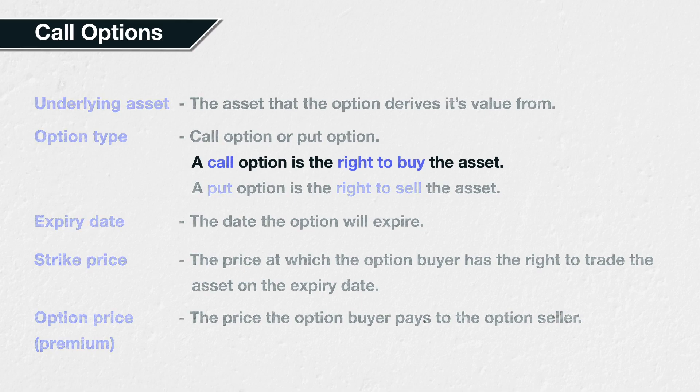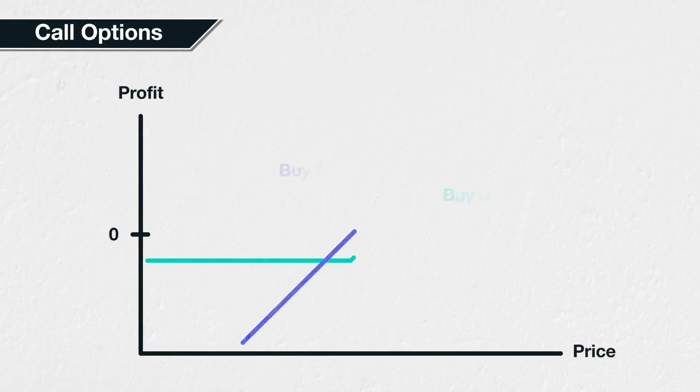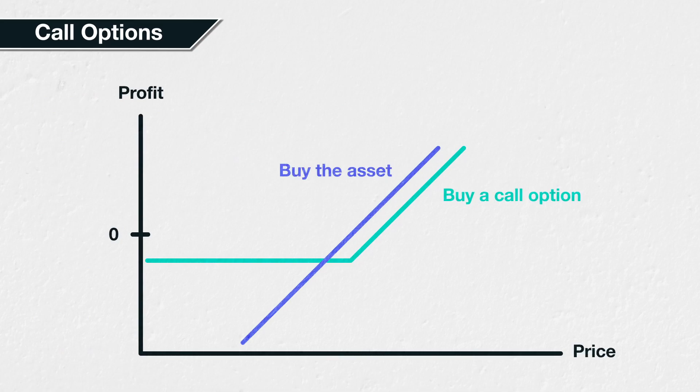A call option gives the option buyer the right to buy the underlying asset at the strike price on the expiry date. As a call option is the right to buy the asset, we will also look at how buying a call option compares to buying the asset itself.